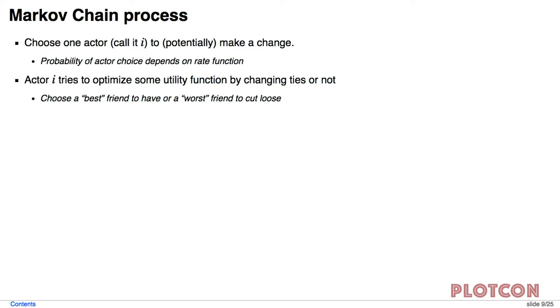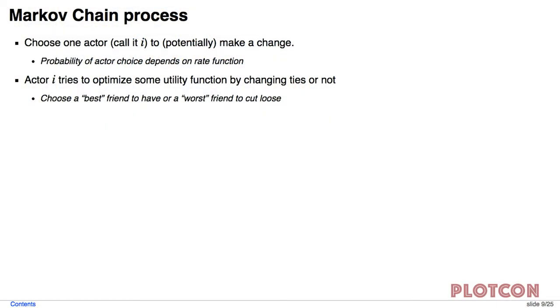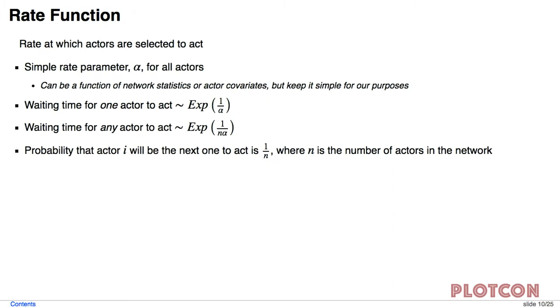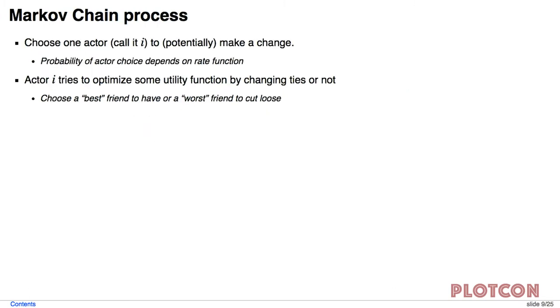So what exactly is this Markov chain process doing? A Markov chain is steps over time, and it's memoryless. So we're going to choose one actor at a time, that's actor i. And we're going to say, actor i, I am allowing you in this model to make a change. The probability of choosing which actor is actor i depends on the rate function. So that's the first part of this process.